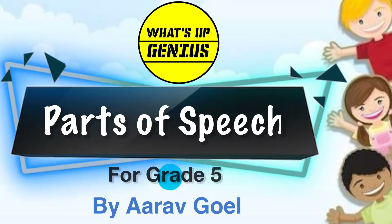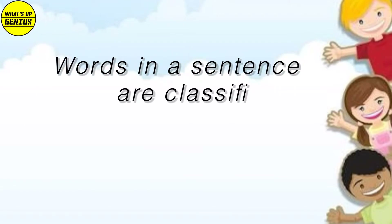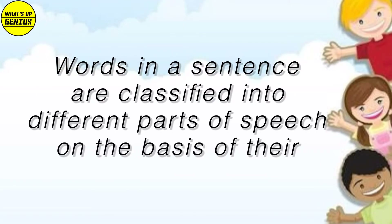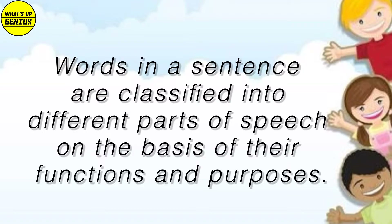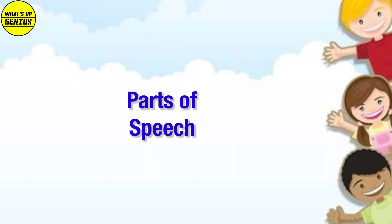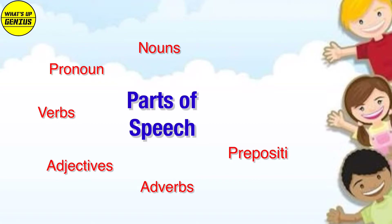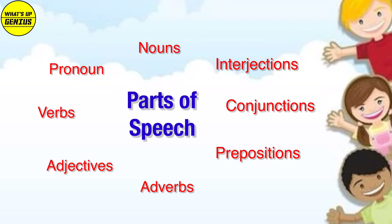Parts of Speech for Grade 5. Words in a sentence are classified into different parts of speech on the basis of their functions and purposes. The parts of speech are: Nouns, Pronouns, Verbs, Adjectives, Adverbs, Prepositions, Conjunctions, and Interjections.